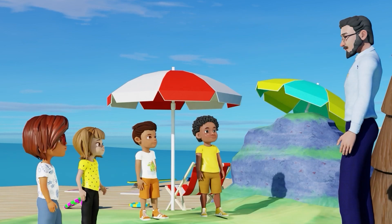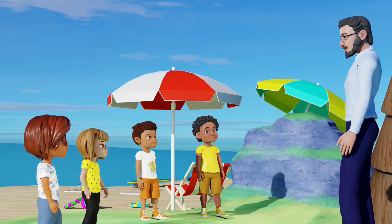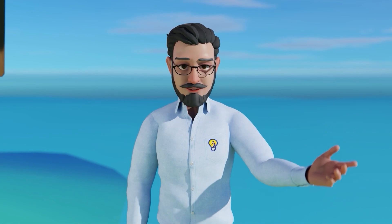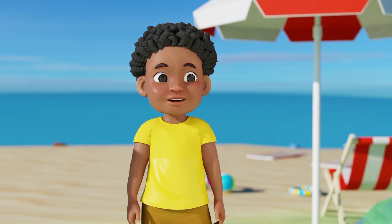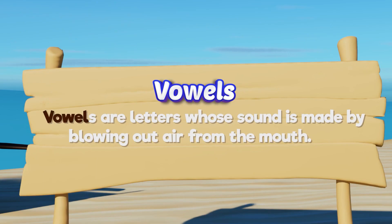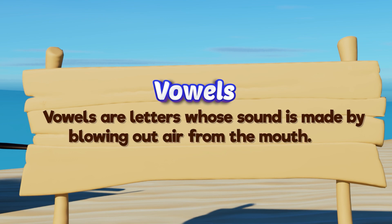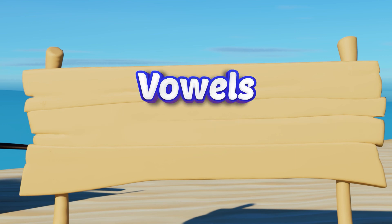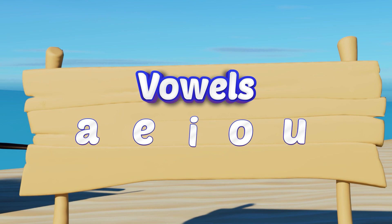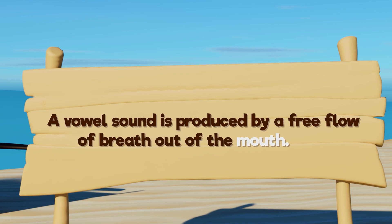Absolutely correct. Now, we'll learn how we can group these letters into vowels and consonants, based on how we pronounce them. What are vowels and consonants? Vowels are letters whose sound is made by blowing out air from the mouth. These are called vowels: A, E, I, O, U. A vowel sound is produced by a free flow of breath out of the mouth.